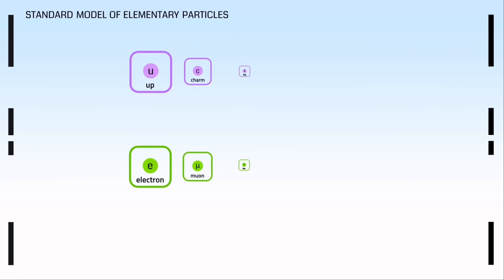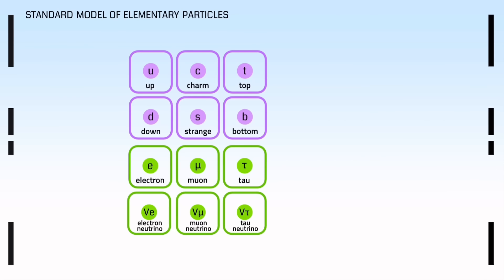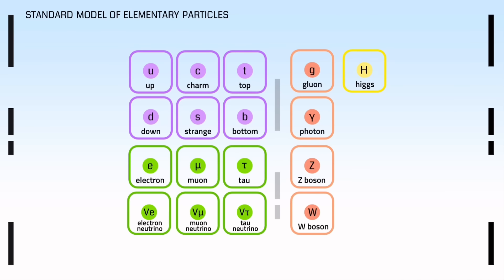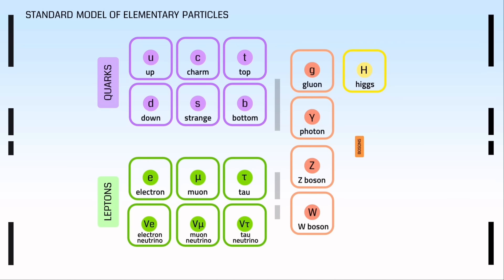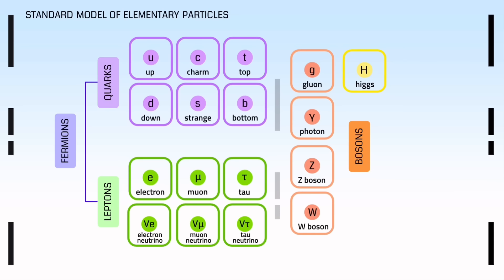The study of elementary particles is called particle physics. Studying and understanding these particles forms the foundation of both classical and quantum physics. So let's return to the standard model. There are 12 matter particles and 4 force carriers classified into 3 families: quarks, leptons, and bosons. Quarks and leptons are together called fermions. All elementary particles have three basic properties: mass, spin, and charge.